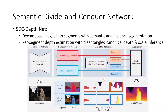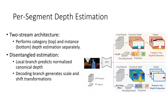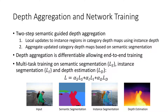SDCDepthNet first decomposes images into semantic and instance segments. Category and instance-wise depth estimation are then performed separately by disentangling canonical depth and scale prediction. The final depth estimation is achieved through a semantic guided aggregation module.